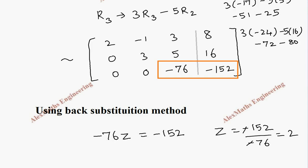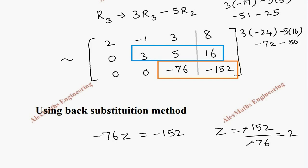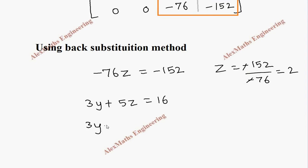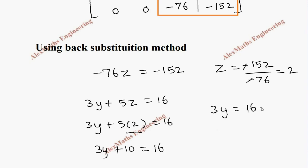Coming to the previous row: 3y plus 5z equals 16. We already know z = 2, so substituting: 3y plus 5 times 2 equals 16, which gives 3y plus 10 equals 16. Therefore 3y equals 16 minus 10, so 3y equals 6, and y equals 6 divided by 3, which is 2.